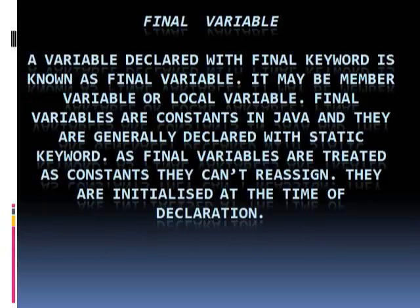Final variable: a variable declared with the final keyword is known as a final variable. It may be a member variable or a local variable. Final variables are constant in Java and they are generally declared with the static keyword. As final variables are treated as constant, they can't be re-assigned. They are initialized at the time of declaration.